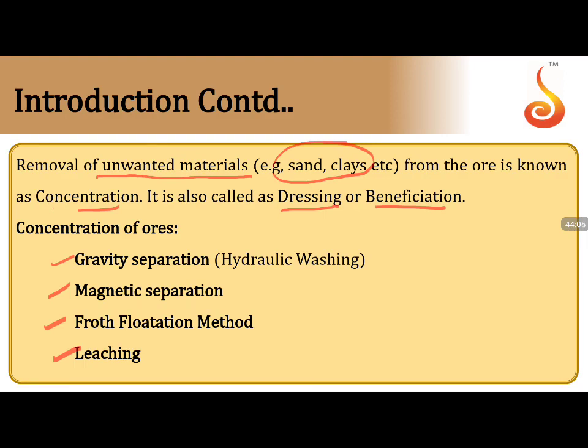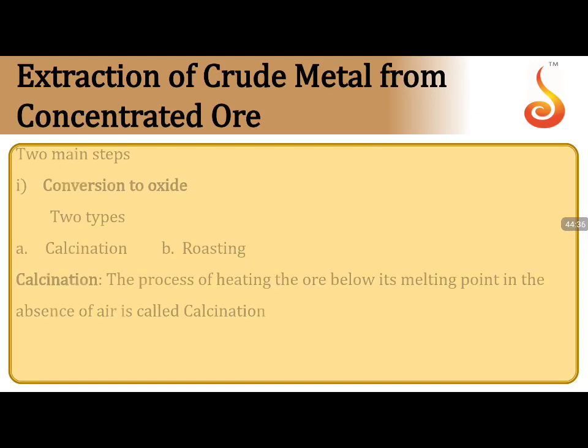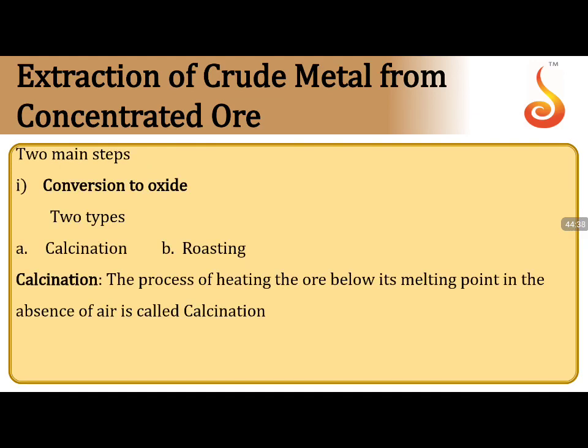Leaching process: cleaning or washing of the substance with suitable solvents/leaching agents. This is commonly observed in aluminium metallurgy (Bayer's process, Hall's process) and in the cyanide process for extraction of silver and gold.